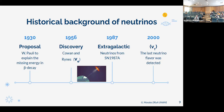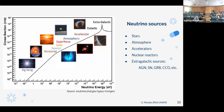Fuentes galácticas como el Sol ya se habían detectado, pero la primera detección extragaláctica se vino hasta el 87, con neutrinos de la supernova de 1987. Hay muchos mecanismos de producción de neutrinos: reacciones nucleares en estrellas, interacción con rayos cósmicos en la atmósfera, aceleradores de partículas, reactores nucleares, y fuentes extragalácticas como núcleos activos de galaxias, supernovas, GRBs y otros objetos compactos. En esta charla me enfoco en estudiar los neutrinos provenientes de los GRBs para estudiar sus progenitores.